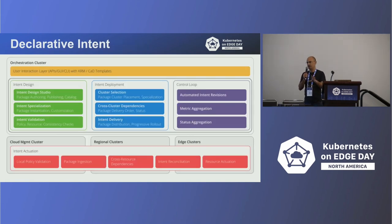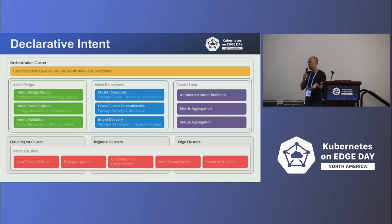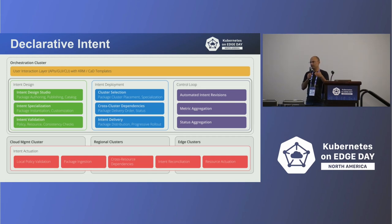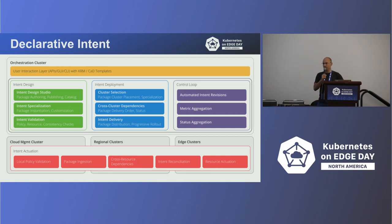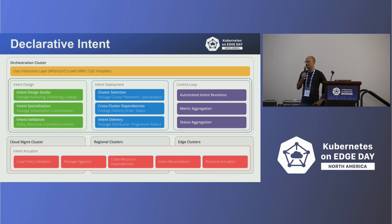Declarative is a core underlying principle of Nephio. There are three pieces: first, you design your intent describing what you want; the intent then gets mutated through a series of operators into something the end cluster can consume — for example, an operator might say this cluster is small, so adjust the scaling factor accordingly. Then you deploy the intent, and a control loop constantly monitors the deployment and reconciles it with your intent.